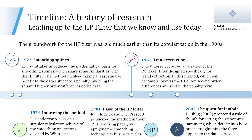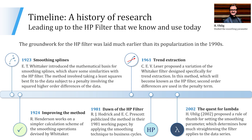In 1961, Lesser proposed a variation of the Whitaker filter designed specifically for trend extraction. In this method, which would become known as the HP filter itself, second order differences are used in the penalty term. 1981 marks the dawn of the HP filter: Hodrick and Prescott publicized the method in their seminal working paper by applying the smoothing techniques to business cycles. In 2002, a whole new strand of literature emerged — Ulich proposed a rule of thumb for setting the smoothing parameter lambda, which determines how much smoothing the filter applies to the data series.